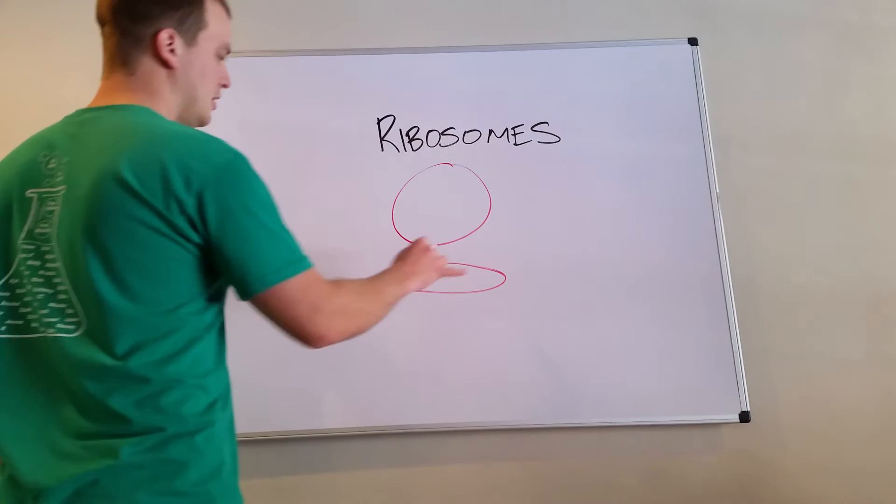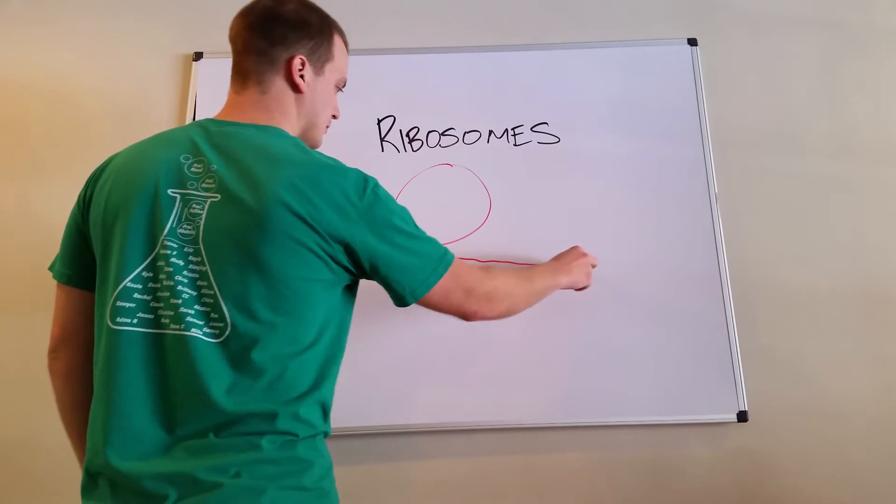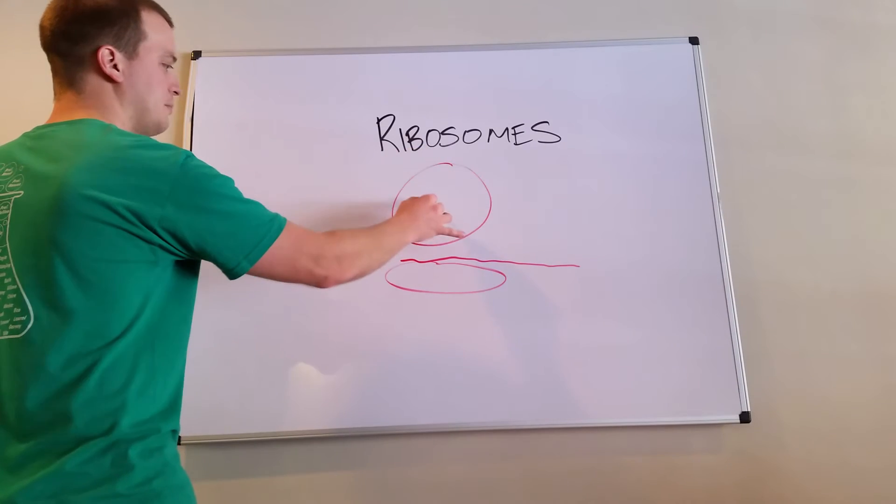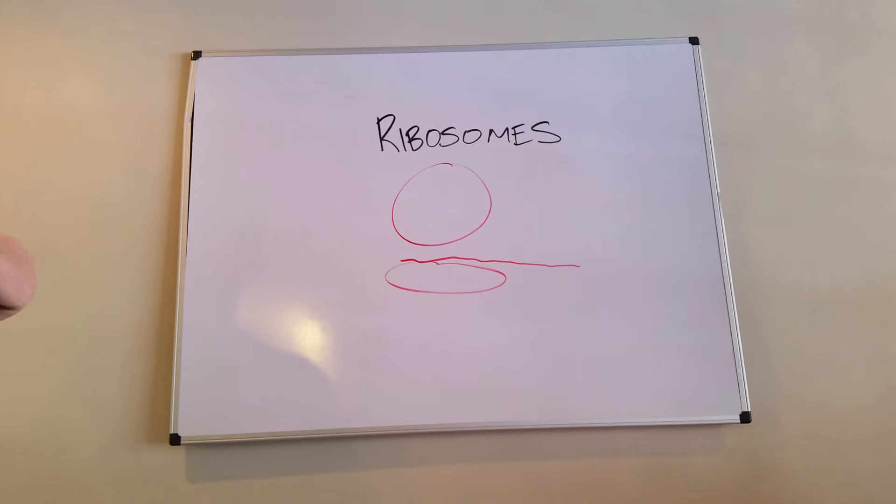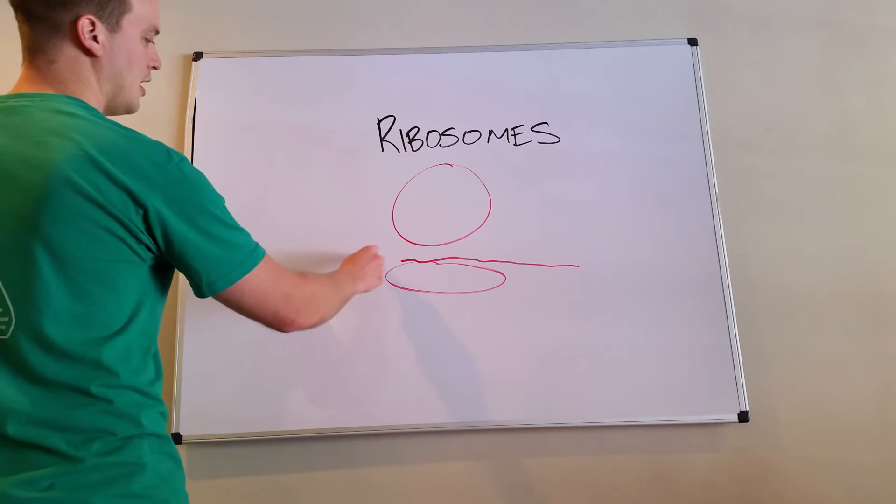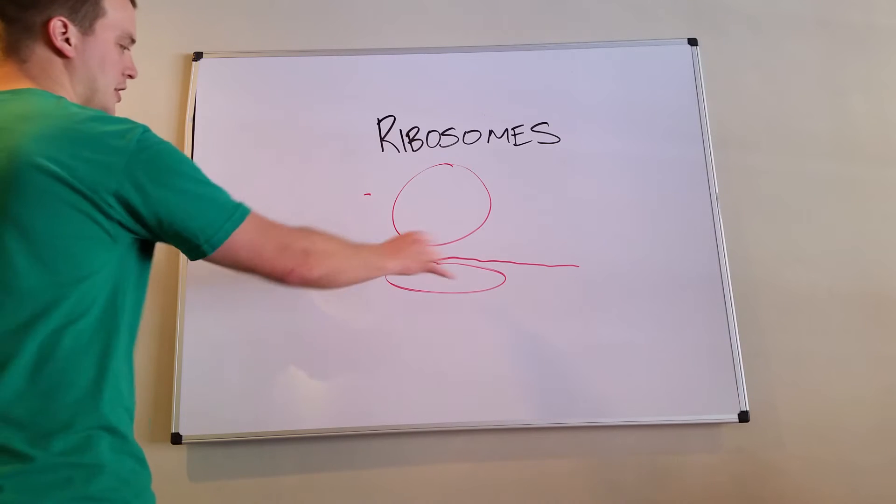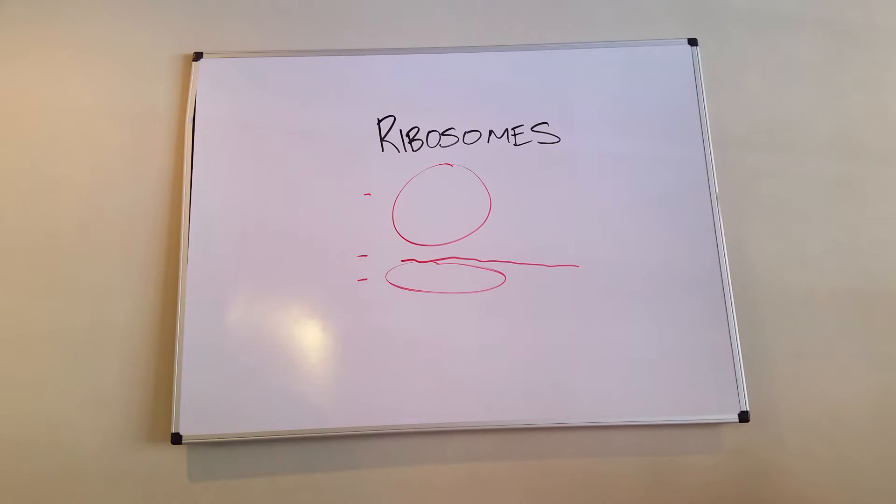The small subunit typically will bind to your messenger RNA and then the large subunit will assemble and form this complex where you have this protein translation complex, this protein synthesis complex, which consists of small unit, mRNA, and large subunit. There you go, you have your protein synthesis complex.